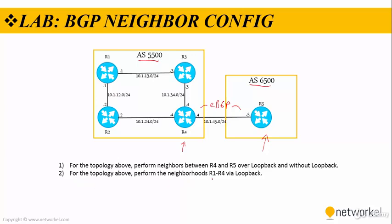In the second step, for the topology above, we need to perform neighborhood between Router 1 and Router 4 via loopback. This guy has a loopback 1.1.1.1 and this guy has a loopback 4.4.4.4, and we need to peer them via IBGP because they are in the same autonomous system. What I'm going to do first is activate an IGP to provide IBGP connection, because before configuring IBGP we need to provide reachability between our routers.